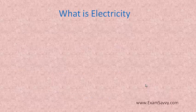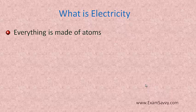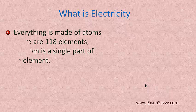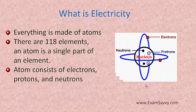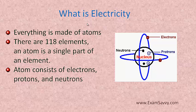We will see what is meant by electricity. Electricity is nothing but a flow of electric charge. Everything is made up of atoms. An atom is a small part of each element — there are totally 118 elements. An atom consists of electrons, protons, and neutrons. Electrons are negatively charged, protons are positively charged, neutrons are neutrally charged, and the central place is called the nucleus.